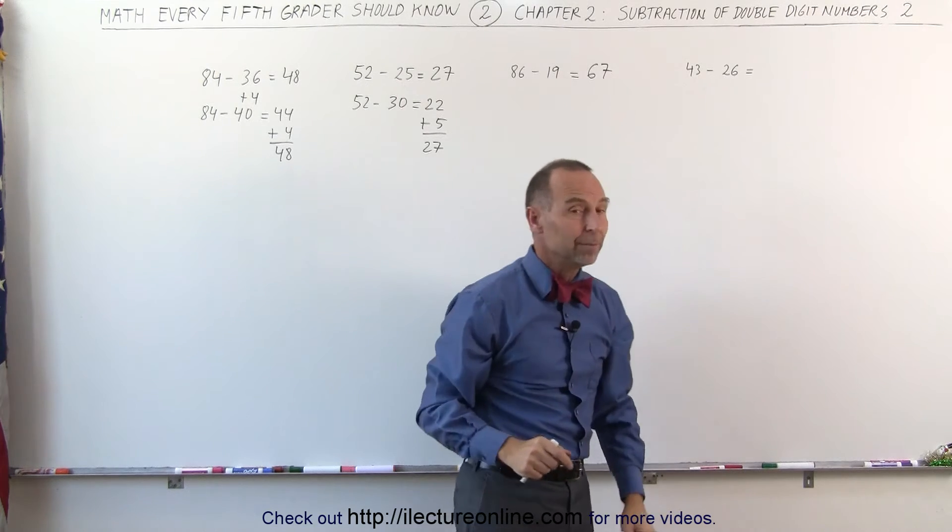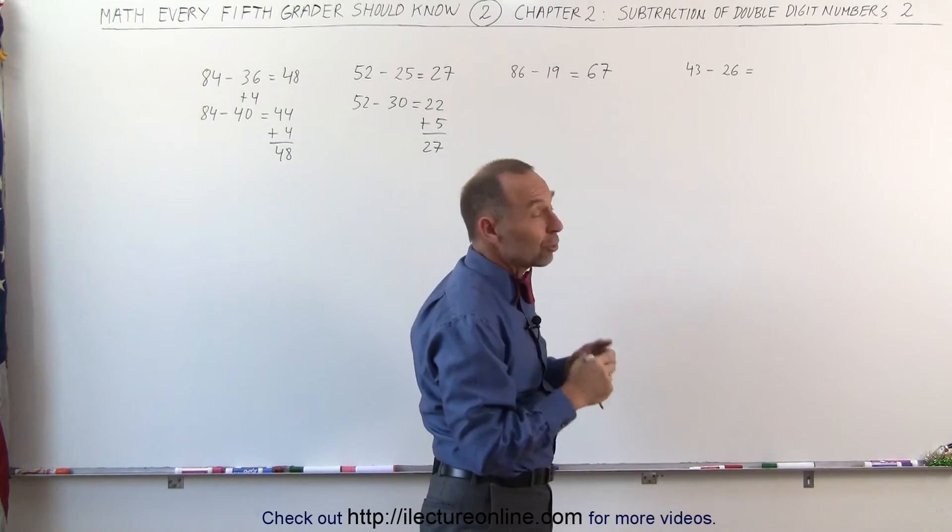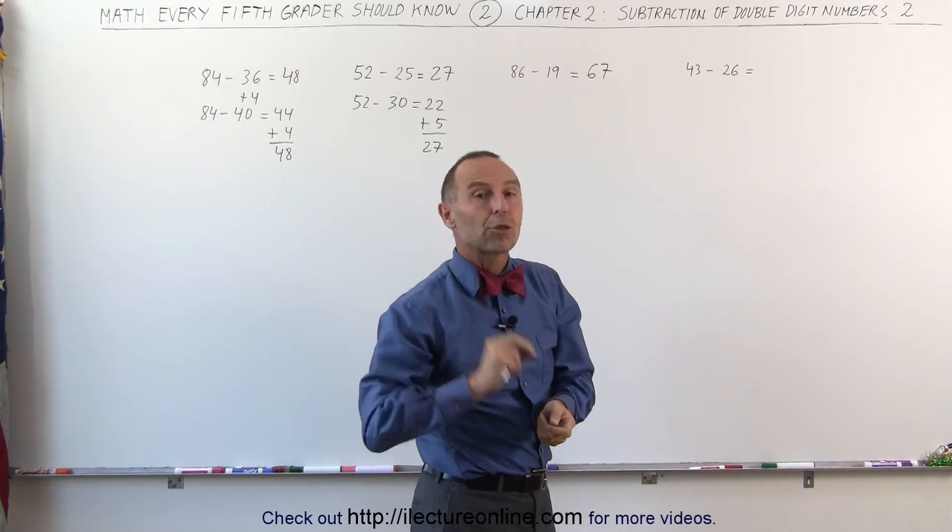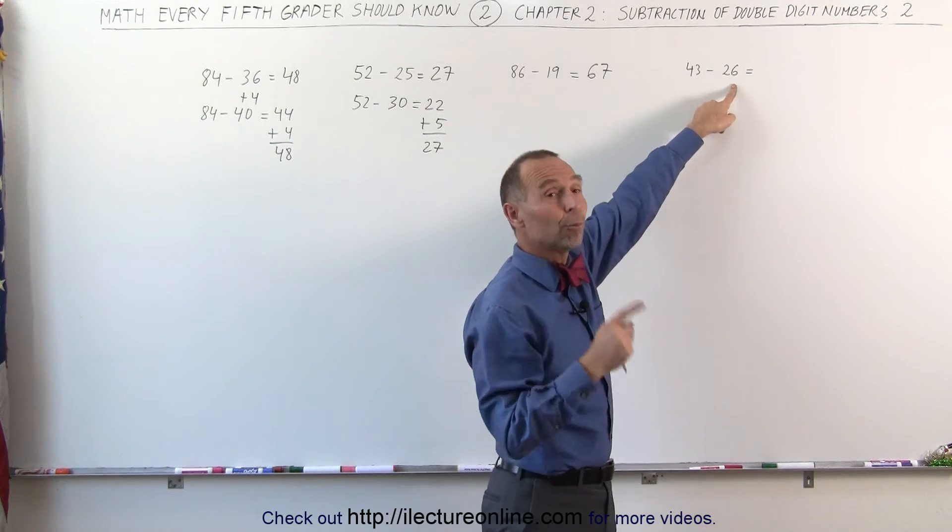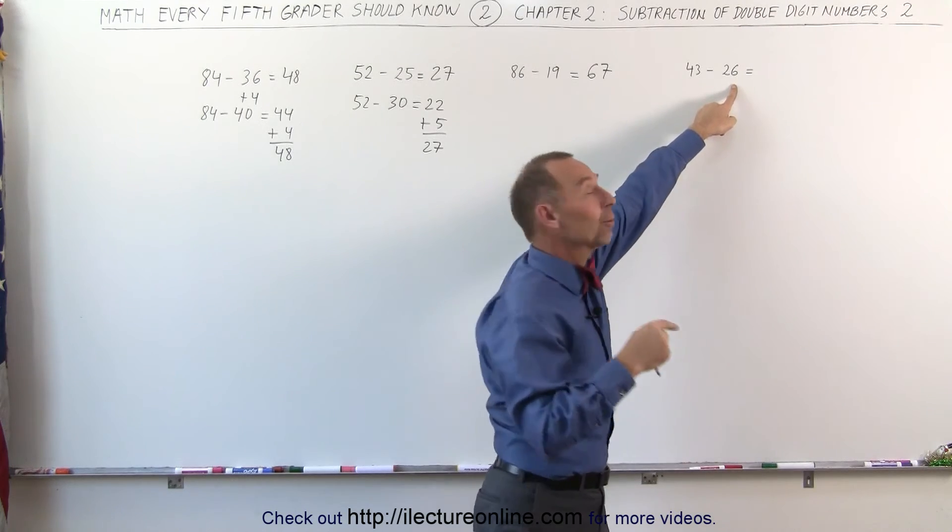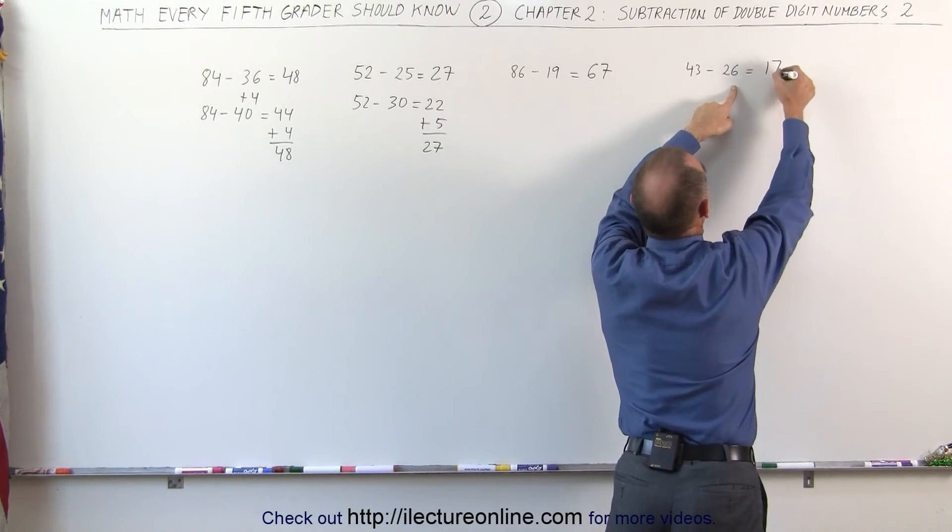Let's do this again over here. Instead of subtracting 26, I'm going to subtract 30. 43 minus 30, that gives me 13. But I subtracted 4 more than I should. 13 plus 4 gives me 17. And that's the answer.